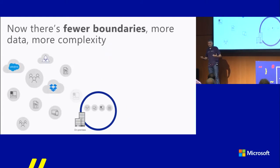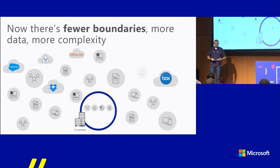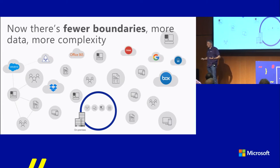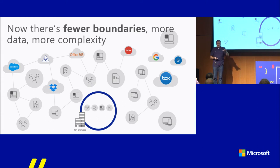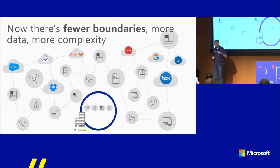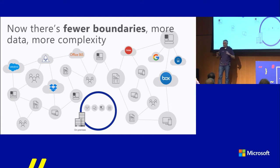We all know the cloud. Everybody's either using Office 365, Google, Dropbox, you name it. We've got a lot of applications, a lot of data, and a lot less boundaries right now. Is there anyone here who works for an organization that does not allow internet access for their users? There are probably still organizations who do that. But you have that cloud now.